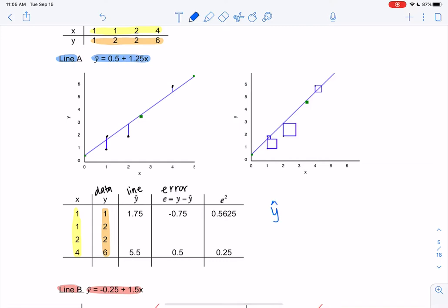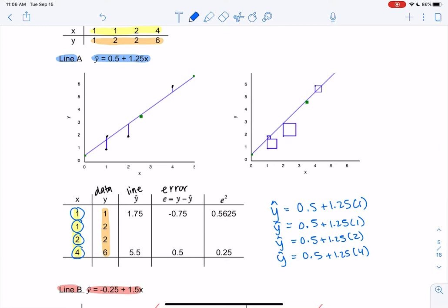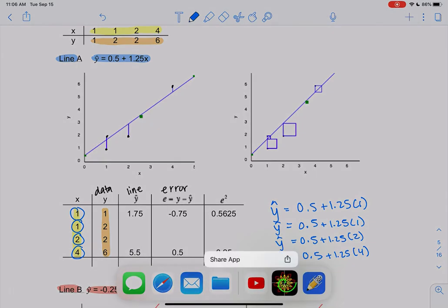So if we want to find y hat for each one, we're going to plug in the x values. So 0.5 plus 1.25, and then we'll plug in 1. The second column happens to also be 1. So this could be like when we were looking at TV size. They were the same size, but they were different prices. That's okay that the y's are different. But the y hats will be the same. And then we'll plug in 2, and we'll plug in 4. So we're just finding error.